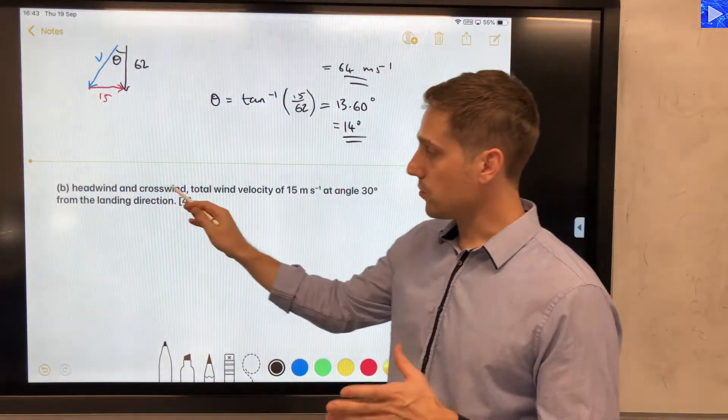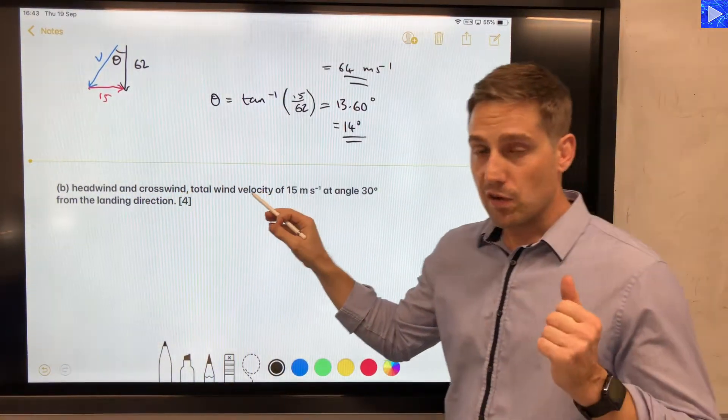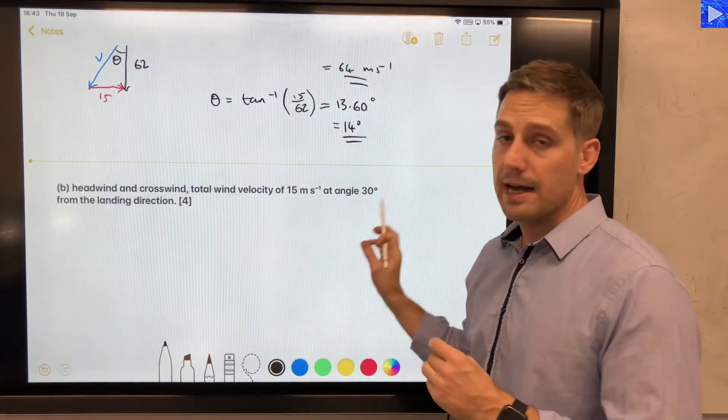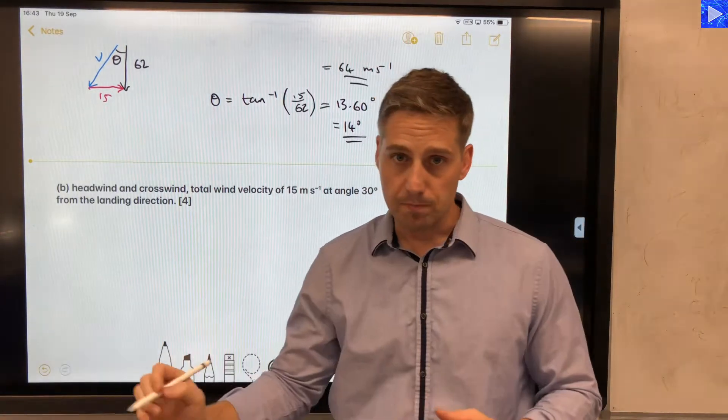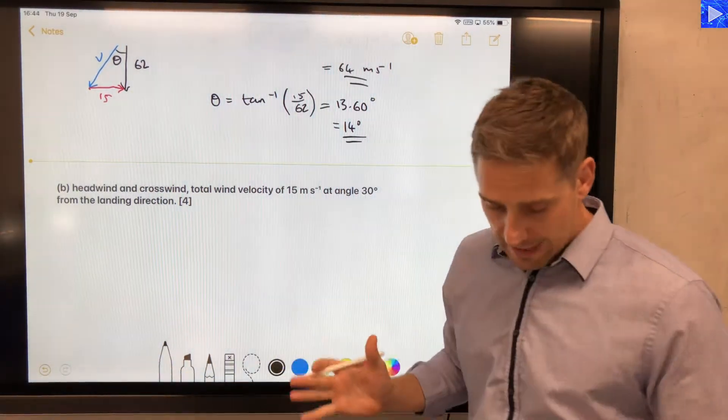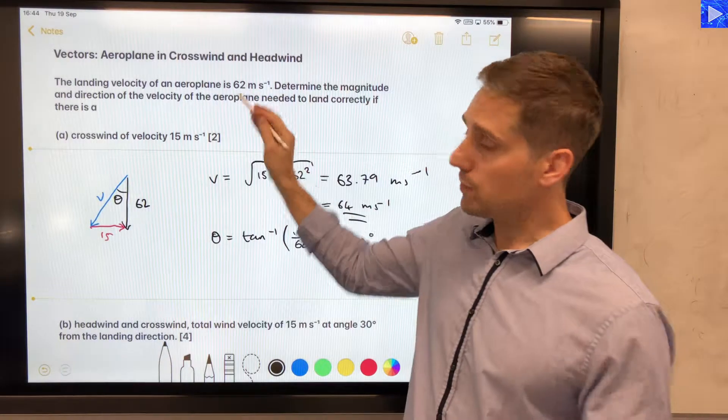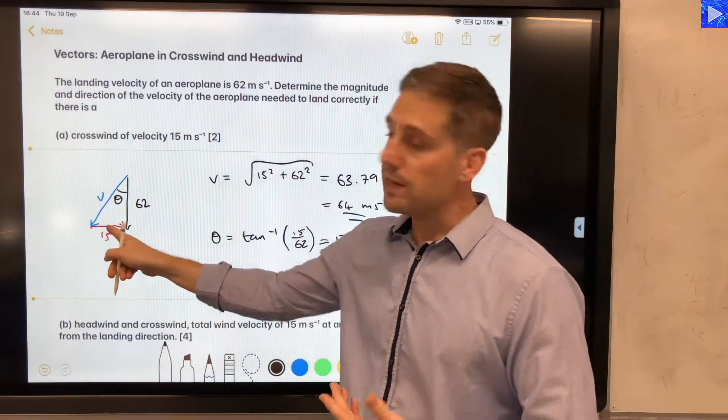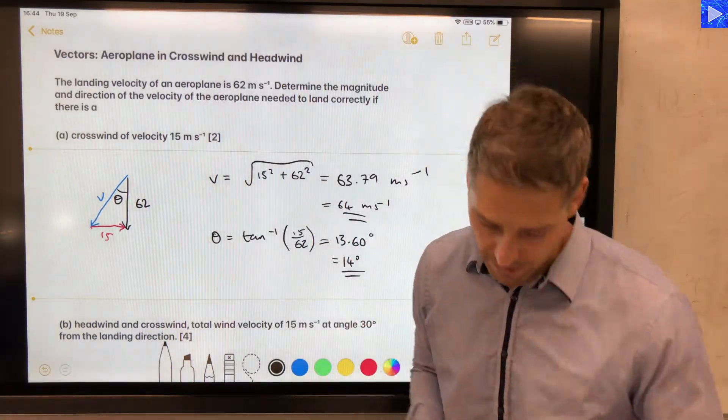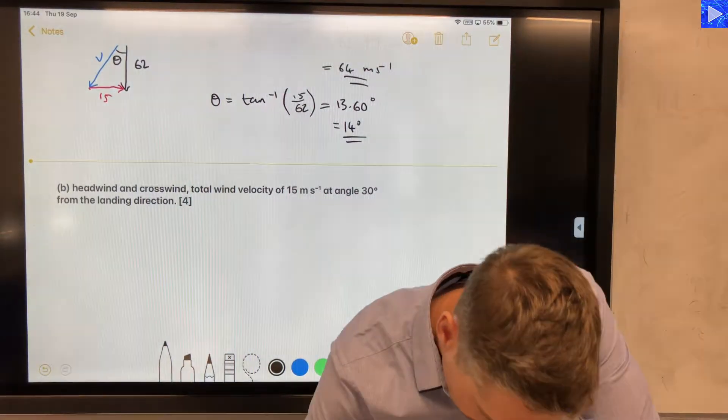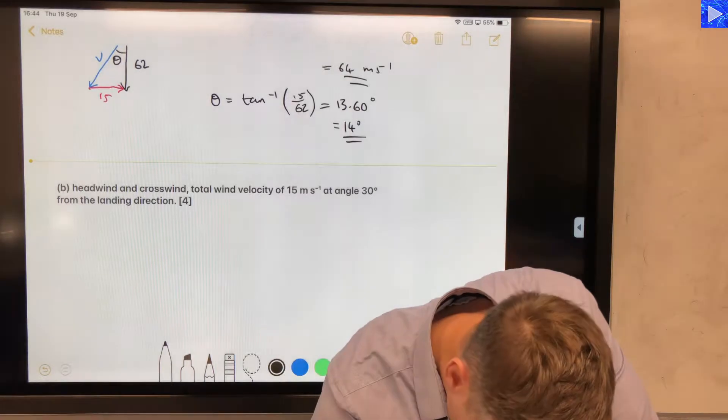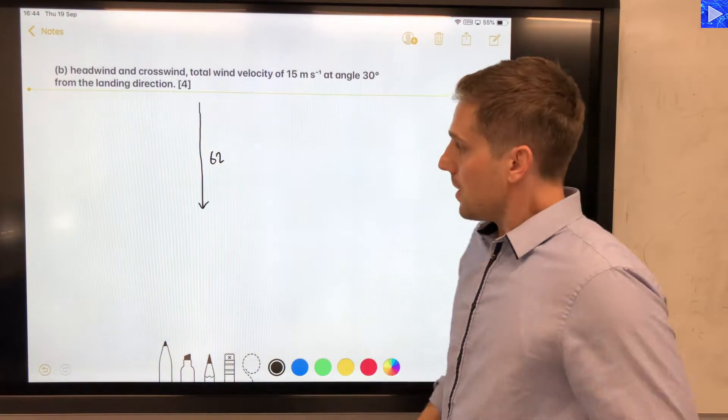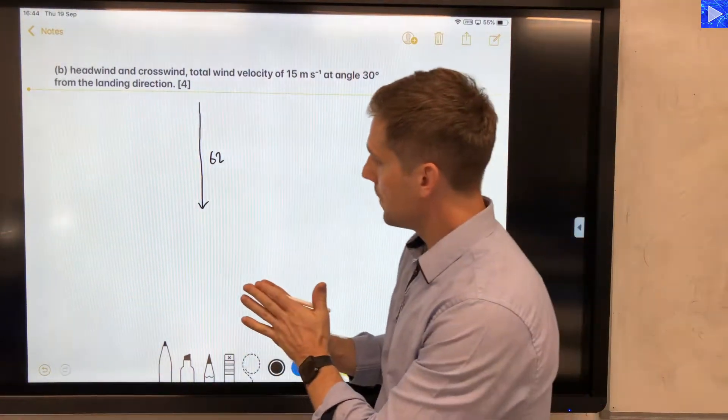Now we have a headwind and crosswind which give us a combined total wind velocity of 15 meters per second at an angle of 30 degrees from the landing direction. So the landing conditions haven't changed. We still need to achieve that 62 meters per second, but it's just this vector here, the 15 meter per second one, is at a different angle. Let's have a look at what that would look like, so I'm going to draw my 62 here. Draw it a little larger this time so that I've got a bit more room to deal with.